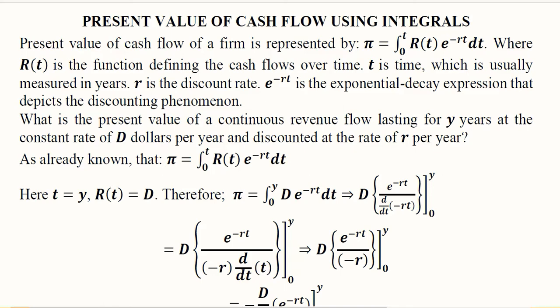This is known as the present value and we are going to assess it using integration. The present value of the cash flow of the firm is represented by π. We know that π is usually used to represent the profit or returns of a certain firm. These are various parts of its formula.